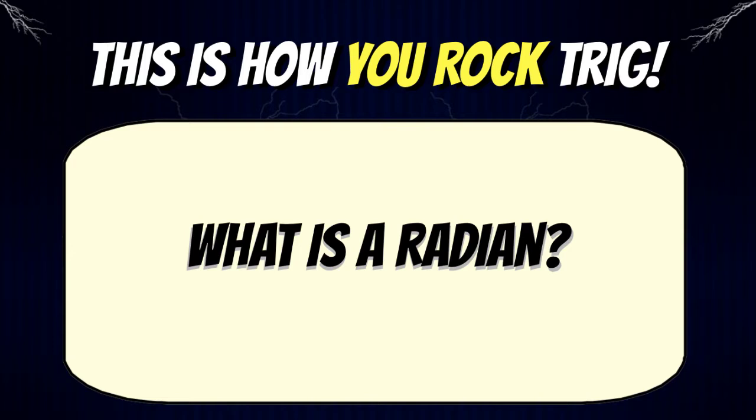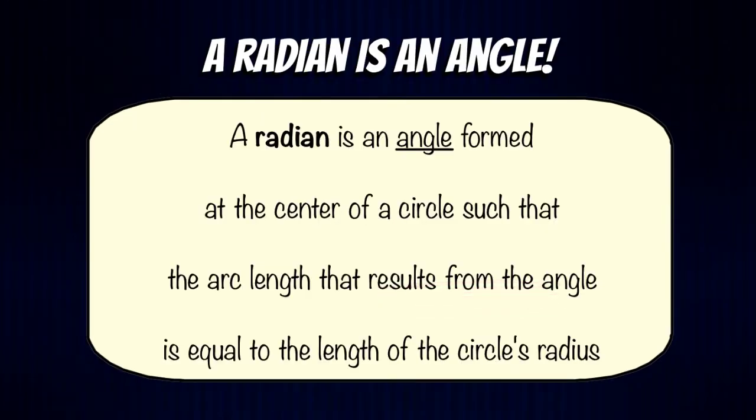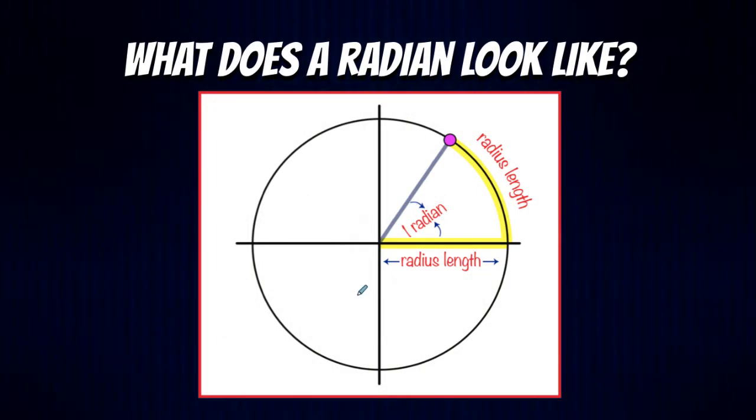Hey everybody, to truly rock trig you need to understand the meaning of radian. What is a radian? A radian is an angle formed at the center of a circle such that the arc length that results from the angle is equal to the length of the circle's radius.